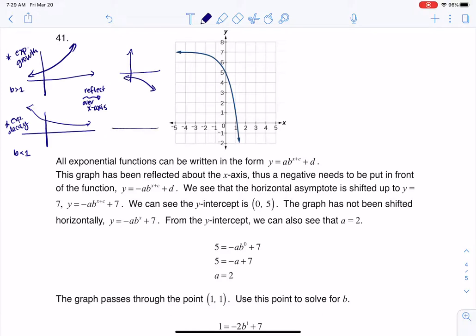And then if I had my decay graph getting reflected, it would look something like this. And if I look at those two, I'm going to switch to my highlighter here. If I look at those two, these graphs seem to match. So at least they're heading in the same direction. So at this point, I think I have an exponential growth model, but it's been reflected over the x-axis.